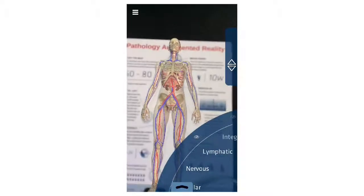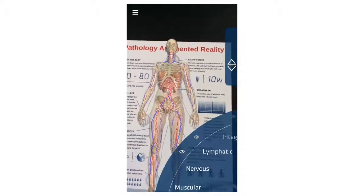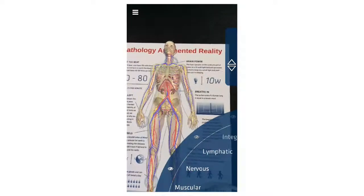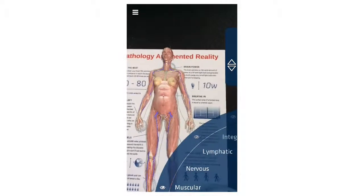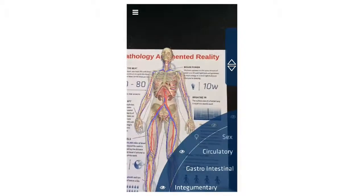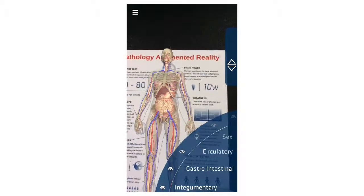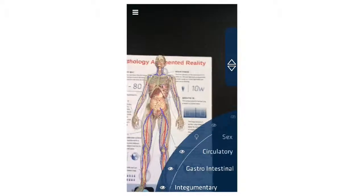We can take this thing. We can choose to show the lymphatic system or hide it, show the nervous system or hide it, the muscular right there. We've got all kinds of things going on, gastrointestinal. And if I go to the other side,